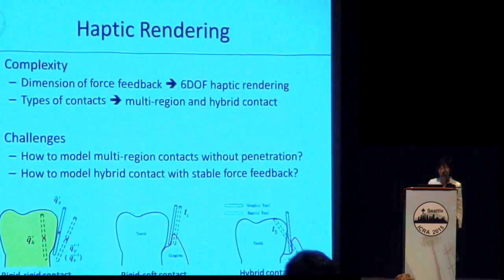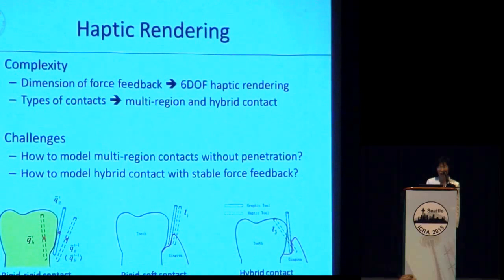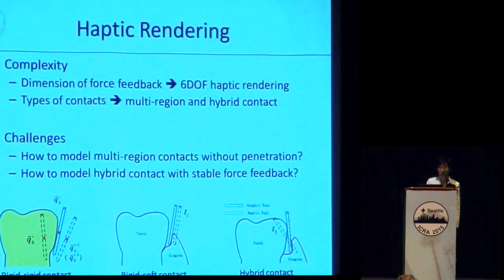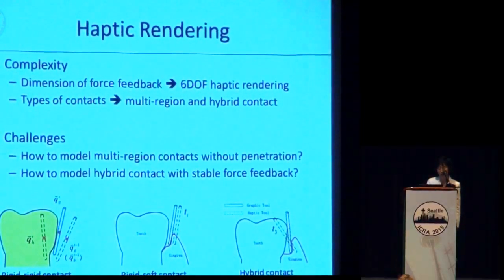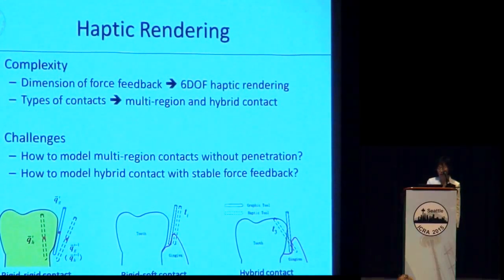The complexity of haptic rendering depends on the dimension of force feedback and the types of contacts. In dental simulation there are different types of contacts: rigid-to-rigid contact between tool and tooth, rigid-soft contact between tool and gingiva or tongue, and hybrid contact — simultaneous hard and soft tissue contact. Furthermore, these contacts may occur in multiple regions, raising two challenging problems: how to model multi-region contact without penetration, and how to model hybrid contact with stable force feedback.